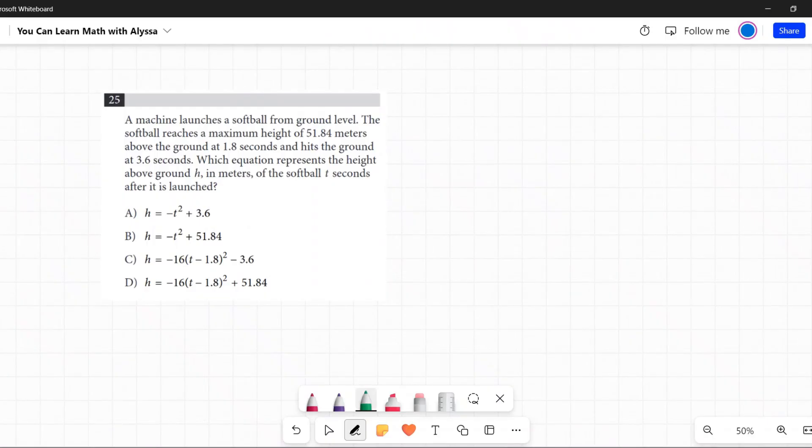A machine launches a softball from ground level. So we're on the ground and it goes way up in the air and it comes back down. It reaches a maximum height of 51.84 meters, so it's up here.